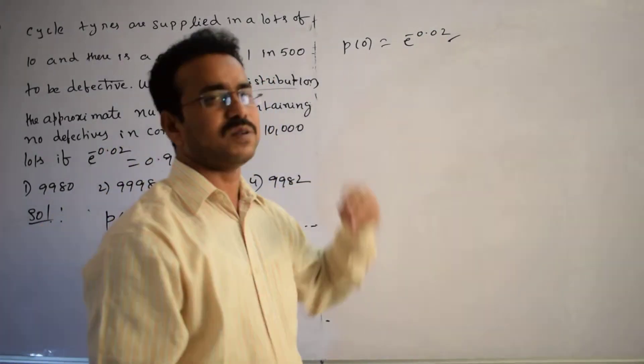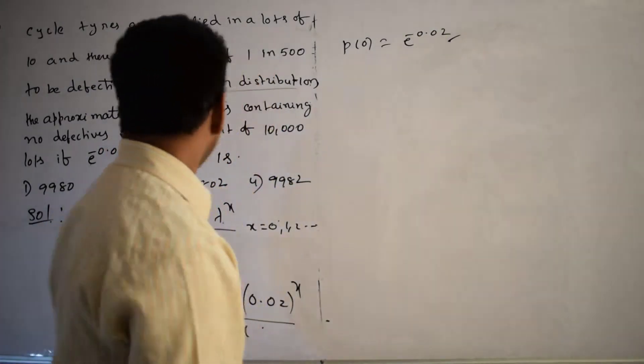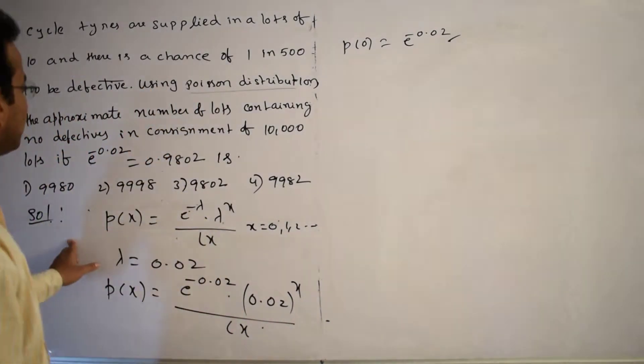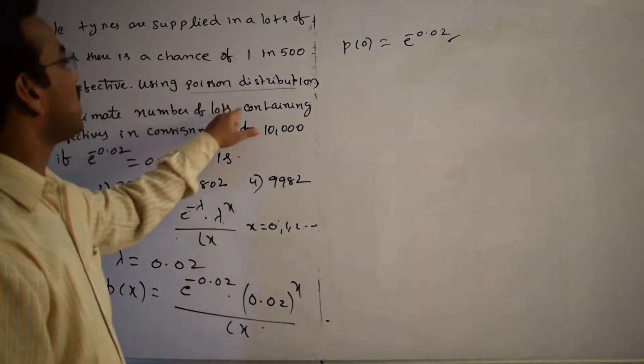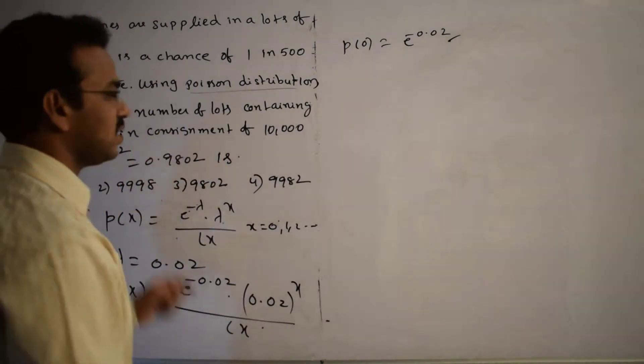One of the required results, which is P(0), probability of no defective. But let us go back to the given question here. Here we have to find the approximate number of lots containing no defectives.